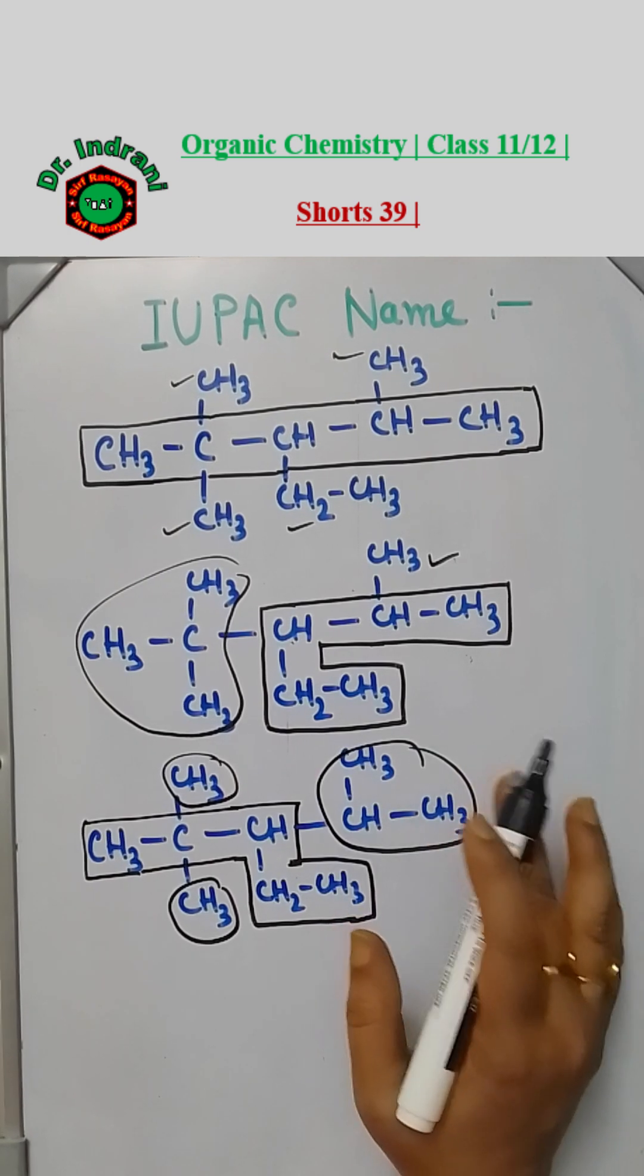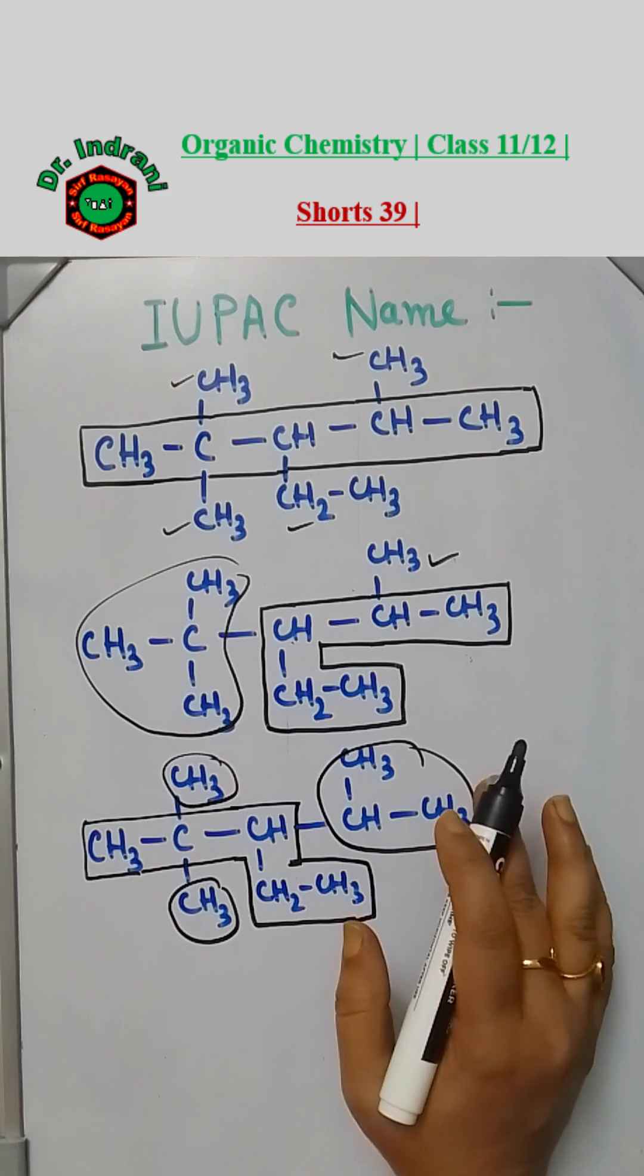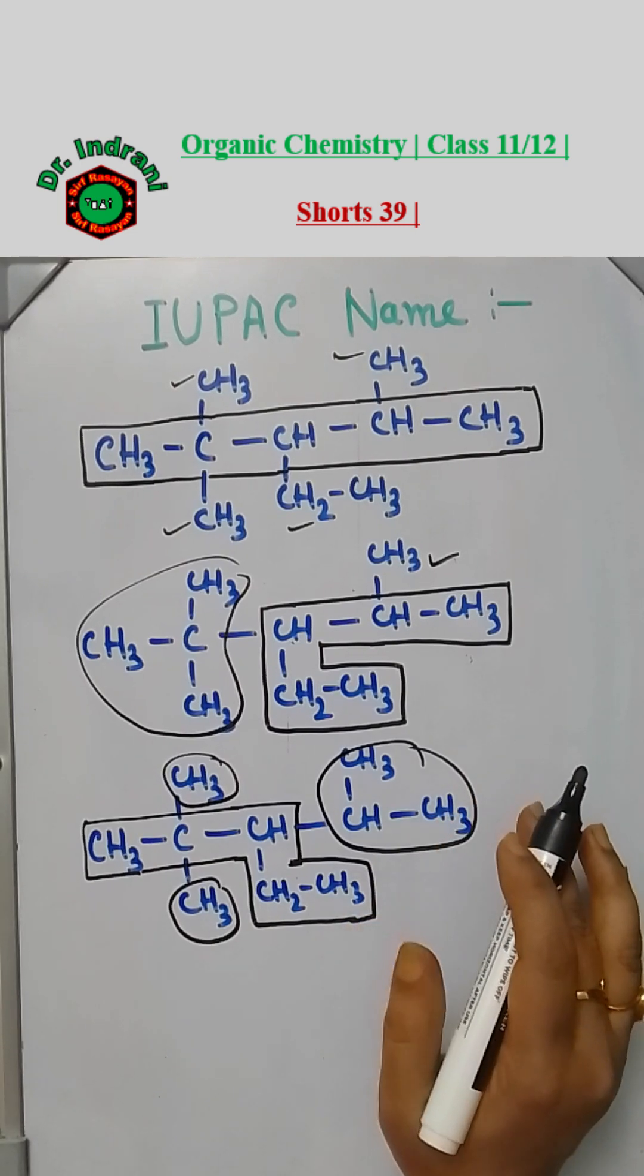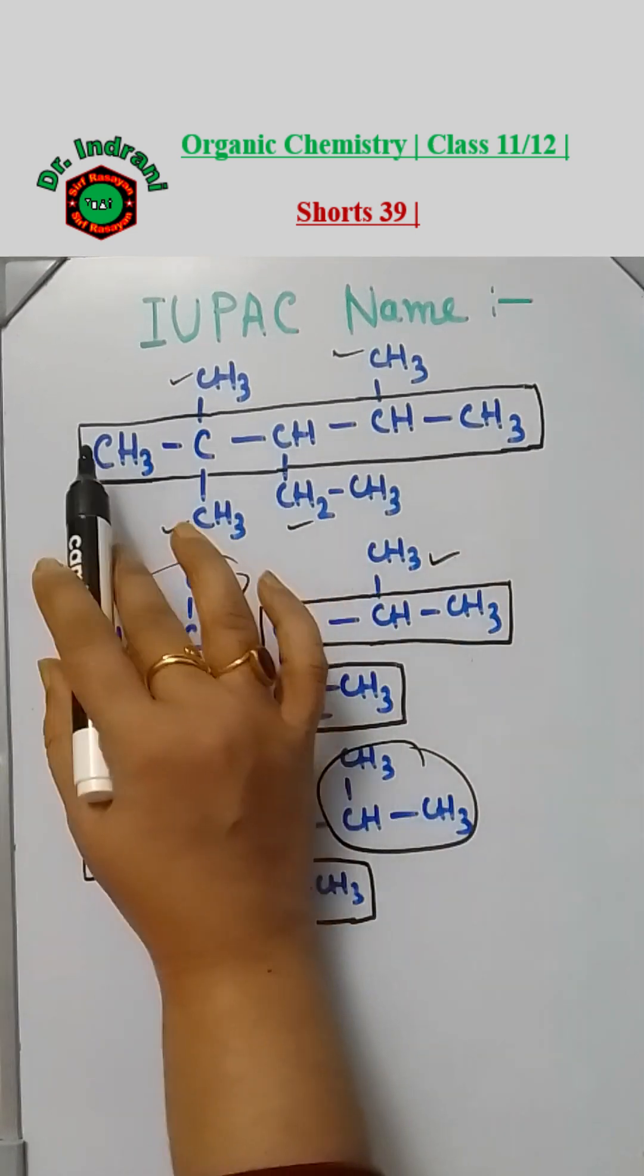You have to take the longest carbon chain with maximum number of substituents as the parent chain. So this is your parent chain.